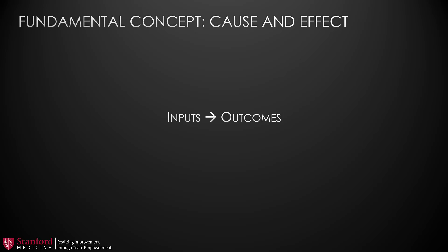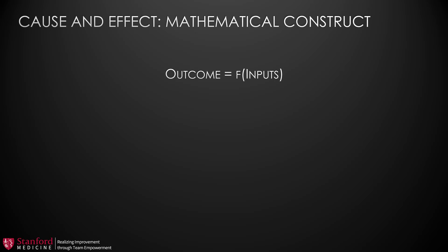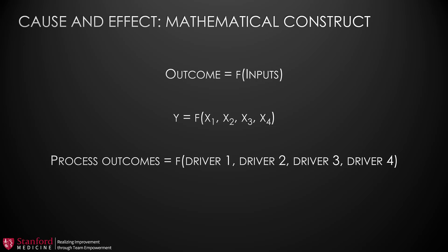A fundamental concept in process improvement is that certain inputs executed in certain ways will result in certain outcomes. In other words, we can control what outcomes we get by controlling what inputs are used and how they're used. If we want to think of this mathematically, we can say that outcomes are a function of inputs — just like saying that y is a function of multiple variables, such as x1, x2, x3, and x4. Or, to use quality improvement language, we're saying that our process outcomes are a function of our key drivers.